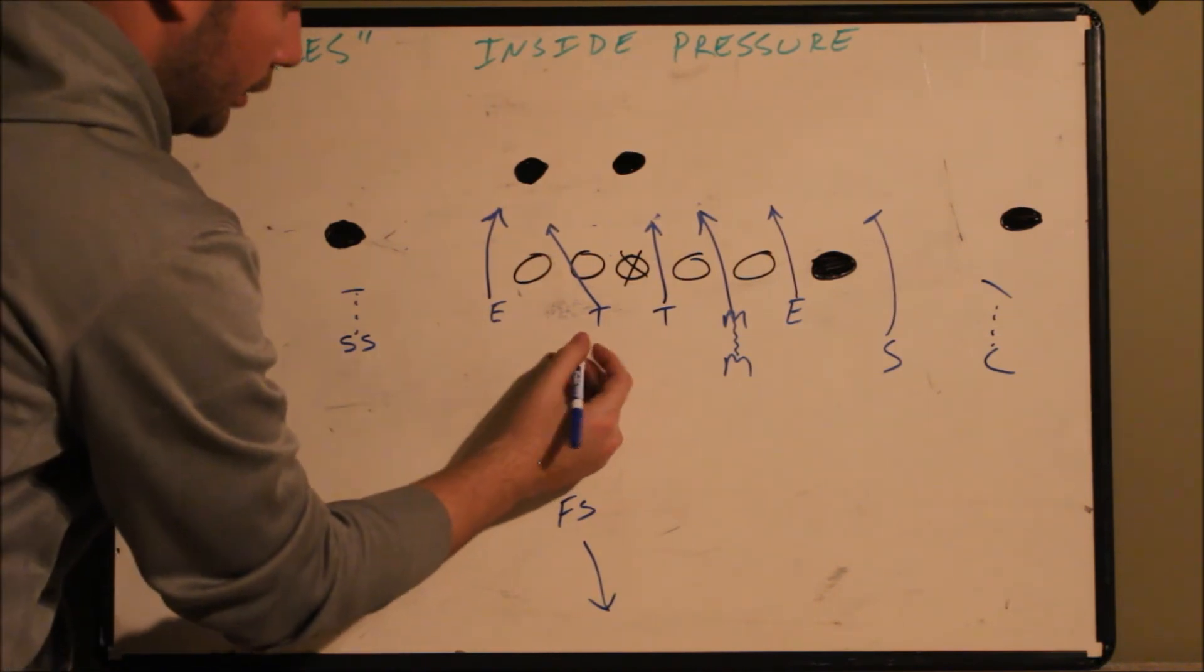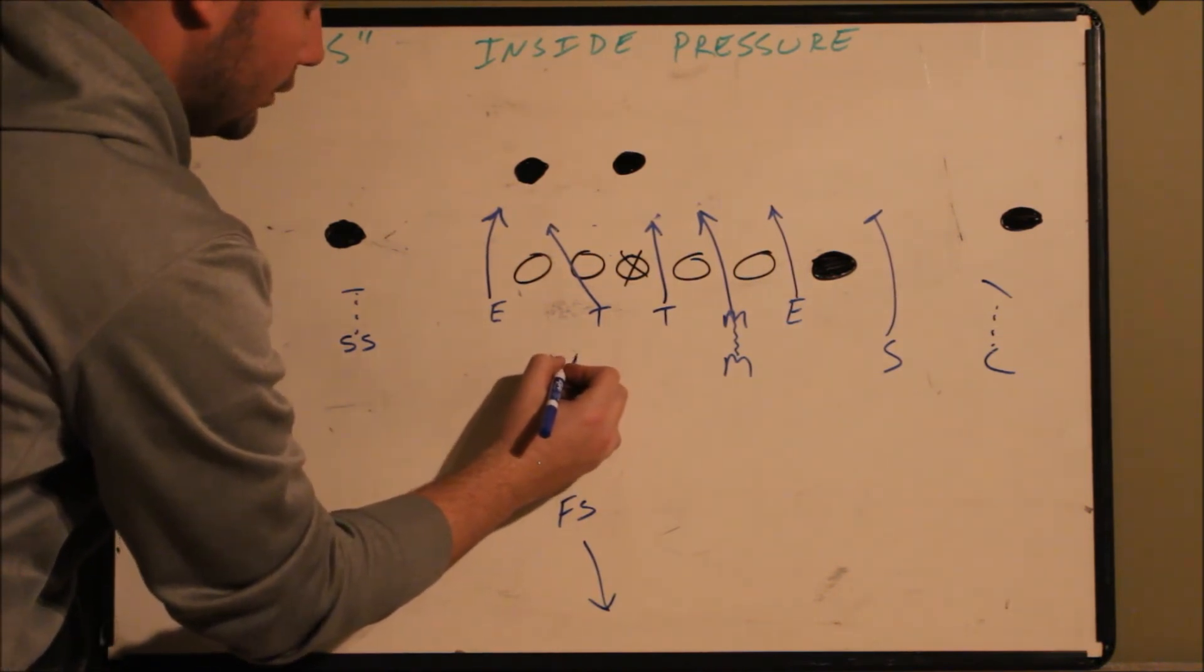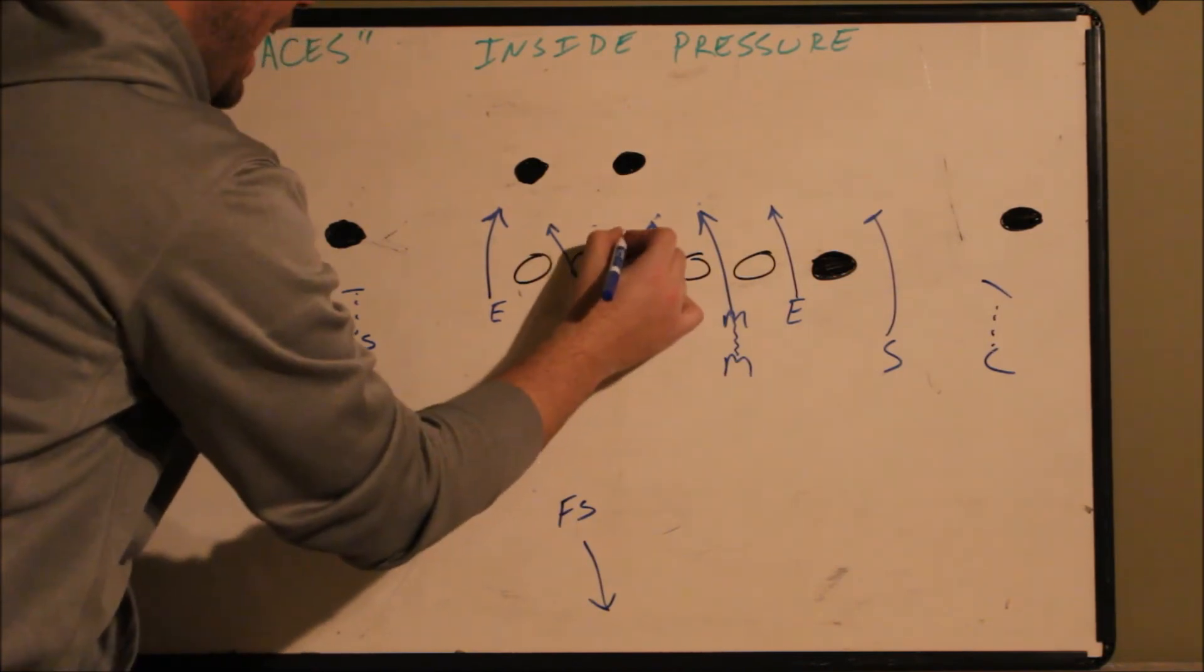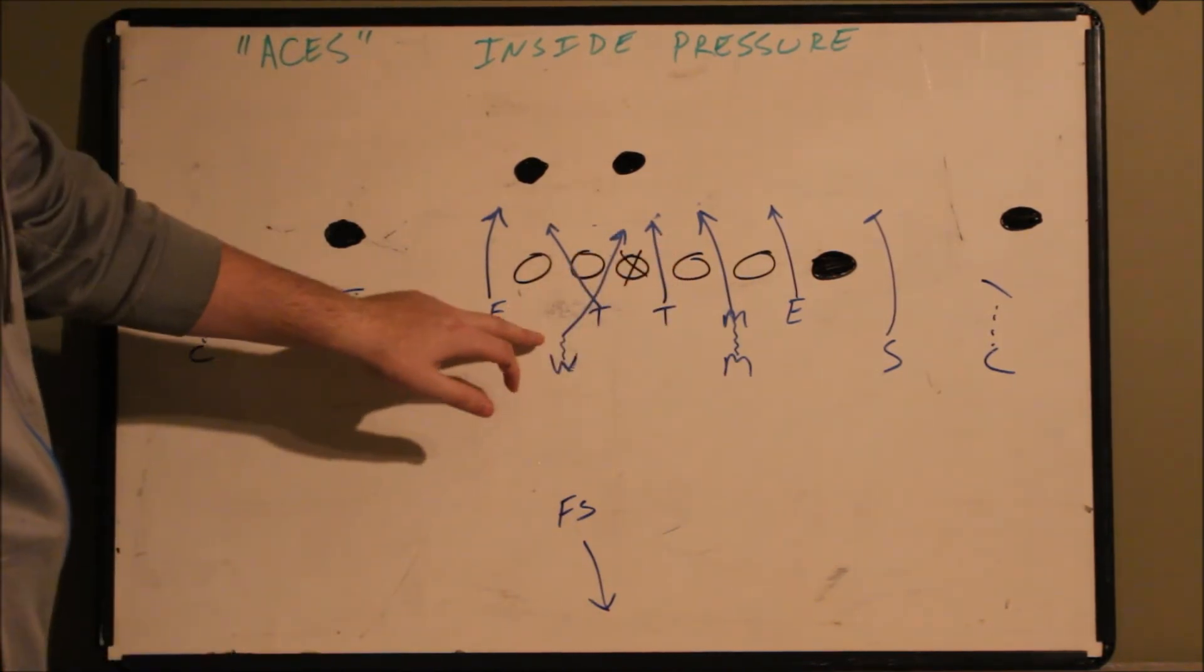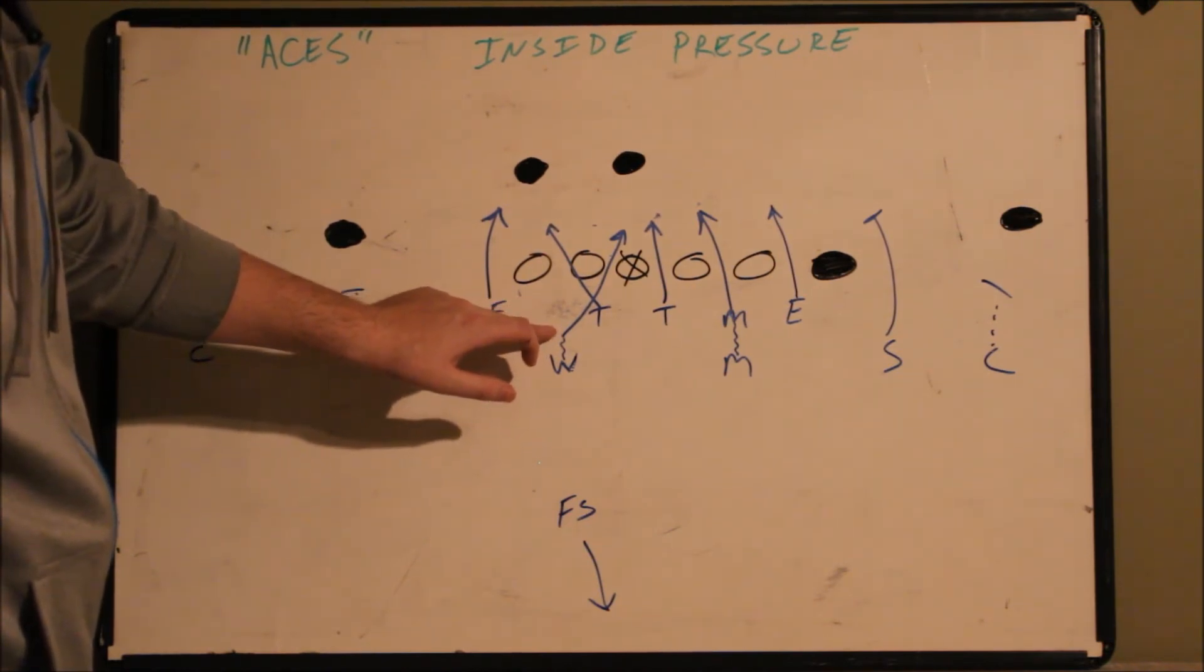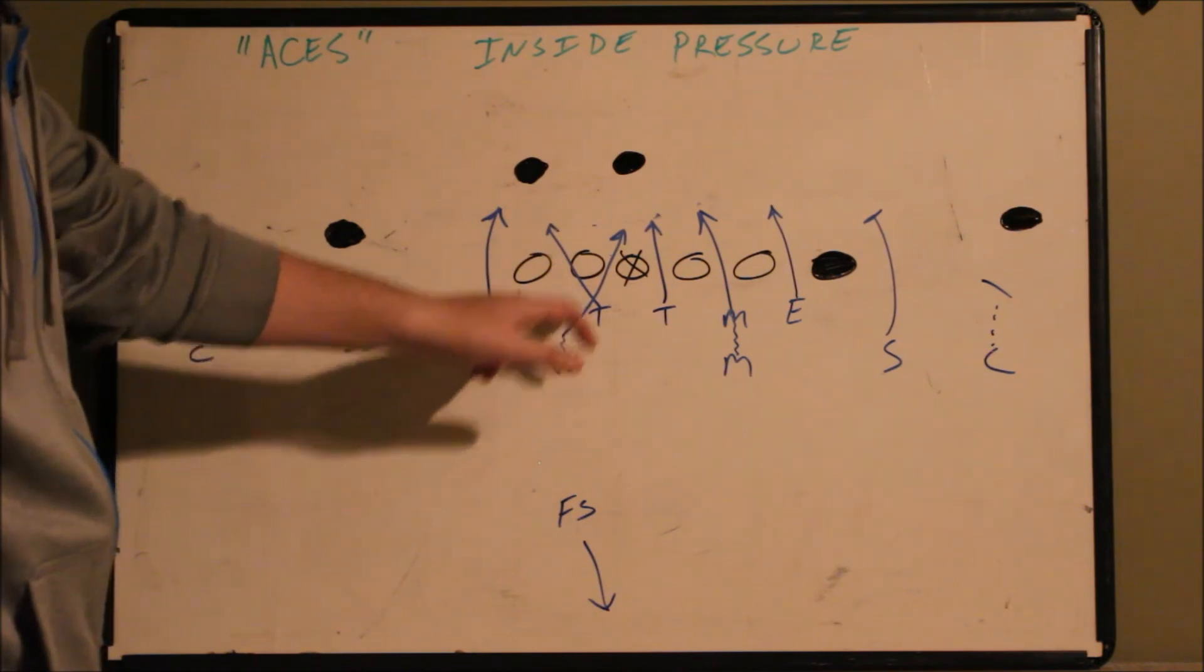Same deal for the will backer. As soon as the quarterback begins his cadence, he's going to creep up. He's coming to A gap. So it's important you don't want him creeping up on the line. You want him about two yards away from the line so he could slant real hard to A gap.